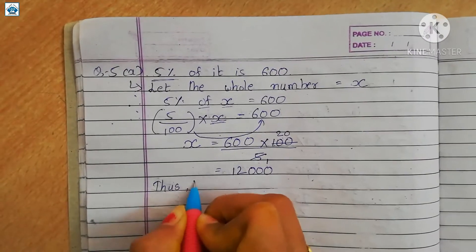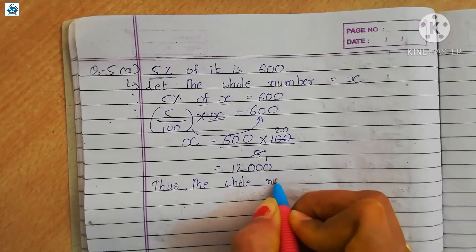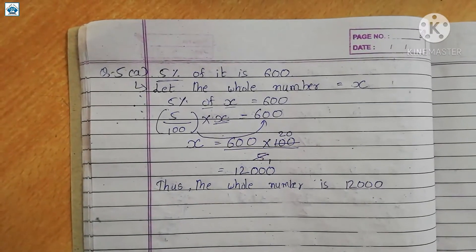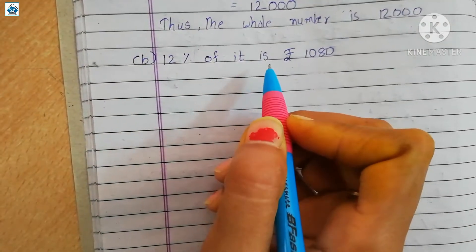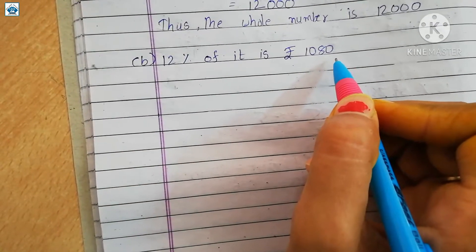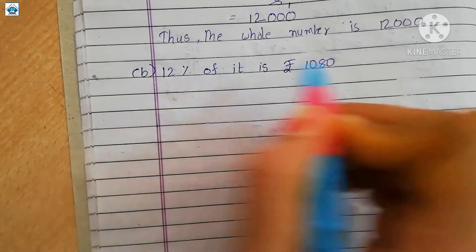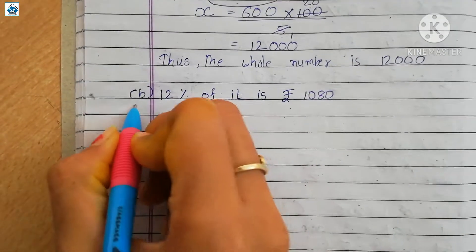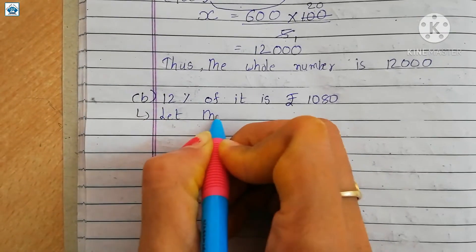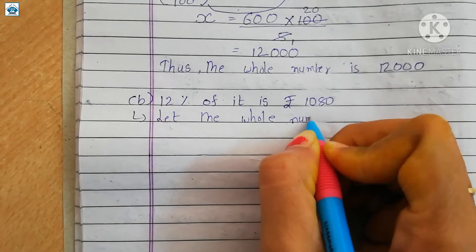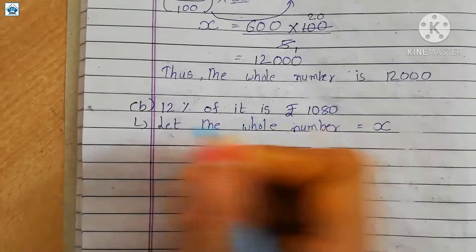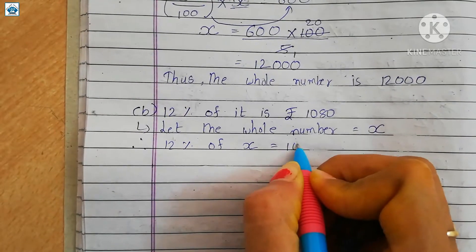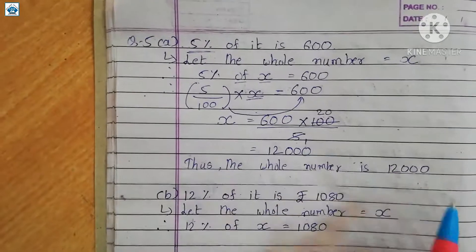So in the last we write down: thus the whole number is 12,000. Part b: 12% of it is rupees 1080. Again, there is a number whose 12% is 1080. We have to find that number. So again we assume: let the whole number equal x. Therefore, 12% of x equals 1080.